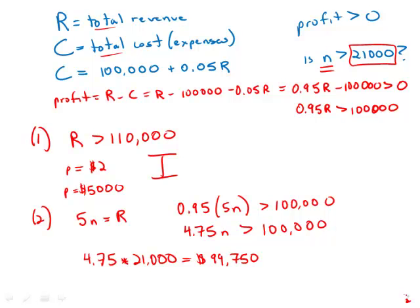In other words, this is not quite enough to be over 100,000, so it means the number of products must be more than 21,000 so that this number is more than 100,000. Statement number two absolutely requires the number of products to be more than 21,000, and so we have a sufficient answer to our question. Statement number one is insufficient, statement number two is sufficient, and the answer is B.